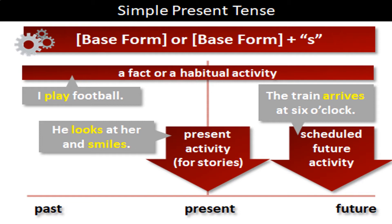Habitual activity — routine activity. What you are doing daily: for example, 'I drink tea every day.' That is a daily habit, so we should use simple present. 'I play football.' 'He looks at her and smiles' — that is a present activity used for stories. 'The train arrives at 6 o'clock' — that is a scheduled future activity, a pre-planned action we mention in simple present.